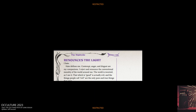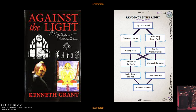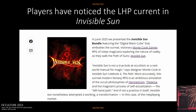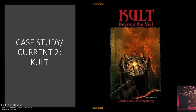The abilities associated with the Night Side are quite scary. 'Renounces the Light' is one of them — expressible in two words: 'I hate.' 'I reject and renounce the conventional morality of the world around me.' Renouncing the light has a skill tree node called 'Tap the Primal Current,' which I think alludes to Kenneth Grant's unofficial tenth volume, his hyper-fictional novel Against the Light: A Night Side Narrative. This influence is acknowledged by designers and received by players. One RPG review says: 'This surreal modern fantasy RPG is an ambitious simulation of the occult philosophies of Hermeticism, Thelema, and the magician's process of self-actualization — the left-hand path.'